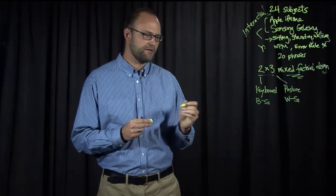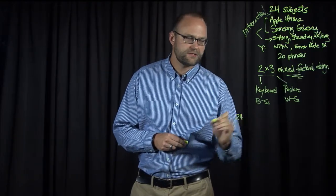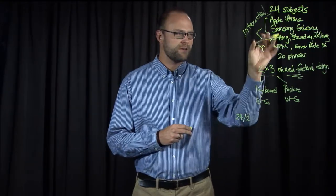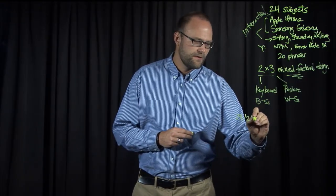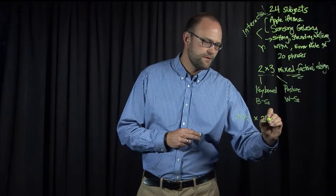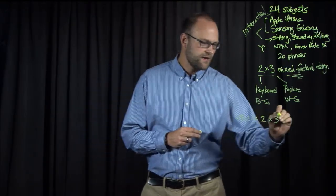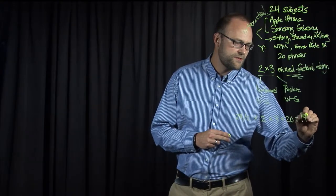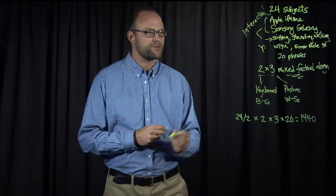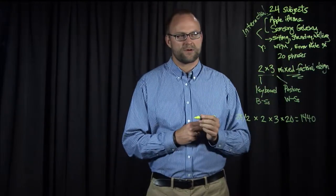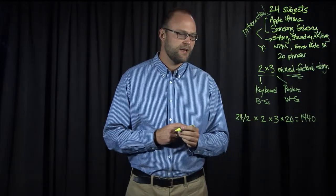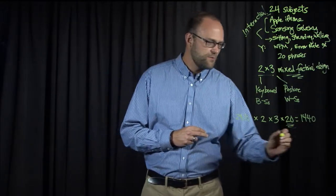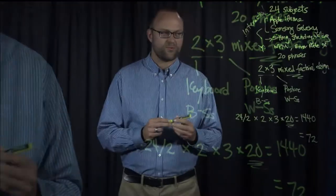So what's the total data that we're gathering? Well, we have 24 subjects, as we said. But we'll divide by two because they're in two separate conditions with respect to the keyboard. Then we have two keyboards. Then we have three postures that everyone does. And as I mentioned, they enter 20 phrases, giving us a total in this study of 1,440 measures of words per minute and error rate. 1,440 text entry phrases and measures over those phrases. And as I mentioned, because we're averaging over the 20 phrases for each of these conditions, we'll end up with 72 data points in this study.